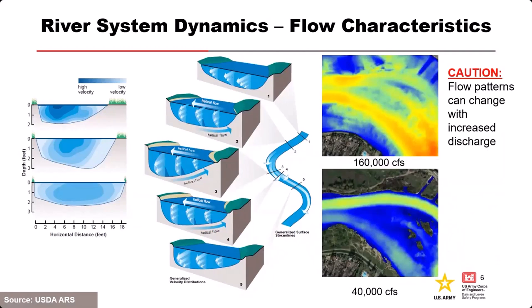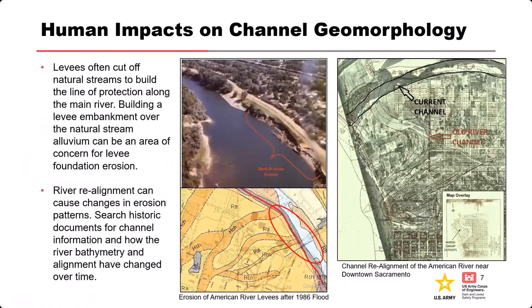Human impacts on channel geomorphology: be aware that levees often cut off natural streams to form a line of protection on the main river. Creeks flowing into the river can be an area of concern because of alluvium underneath — if cut off improperly it can be an area for foundation erosion. Realignment can also cause changes in erosion patterns. On the Sacramento, the American River used to come in differently, and knowing those historical changes is important because it affects your foundation geology.